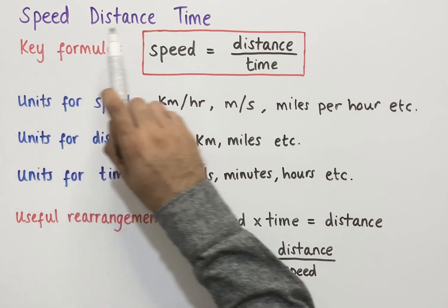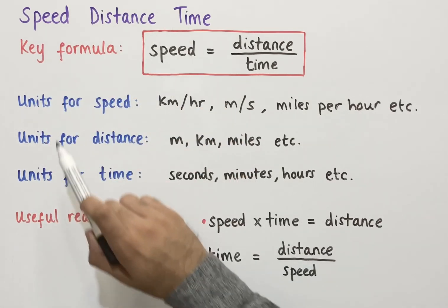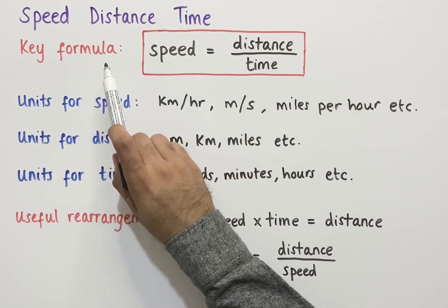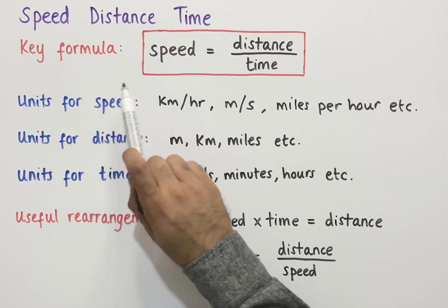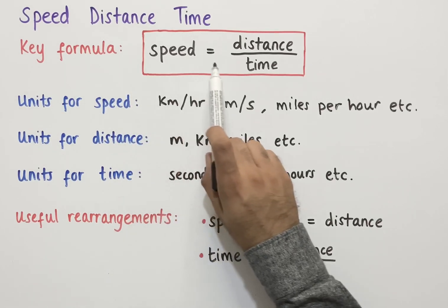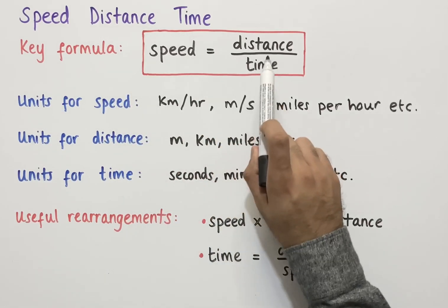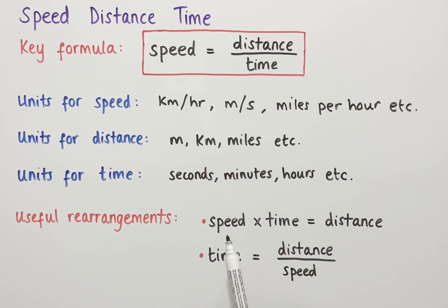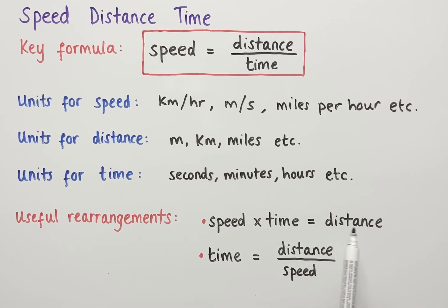Let's look at speed, distance, and time. The key formula for this topic is that speed equals distance divided by time. Some useful rearrangements are that speed multiplied by time equals distance, and time equals distance divided by speed.